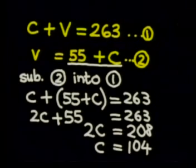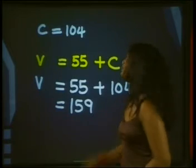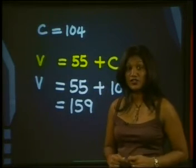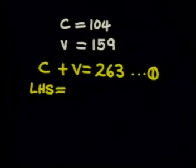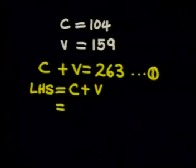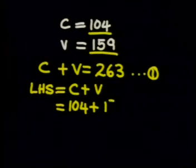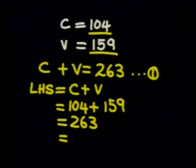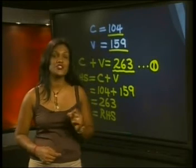Then we found a solution for C — there were 104 CDs in the collection. We then used this answer to find out the value for V, the vinyls. Our last step is to check the solution. We check our answer by substituting into equation 1. The left-hand side is C plus V, which is 104 plus 159, giving a total of 263 — equal to the right-hand side. So our solution was correct.